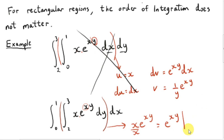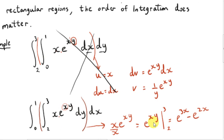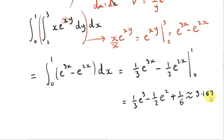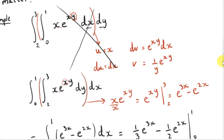Our outer limits are from y equals 2 to y equals 3, giving us e to the power of 3x minus e to the power of 2x, and a final answer of approximately 3.167. Reversing the order of integration made this problem far easier. Doing it in the original order would have required integration by parts at the start, and the subsequent integral with respect to y would have been even more complicated.